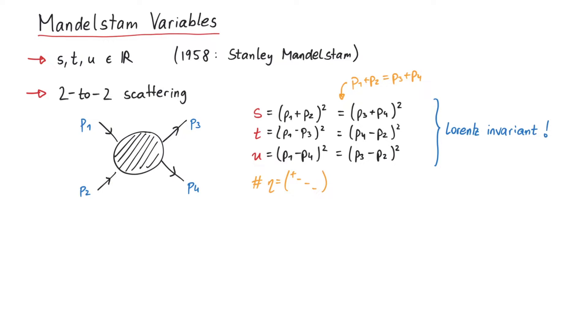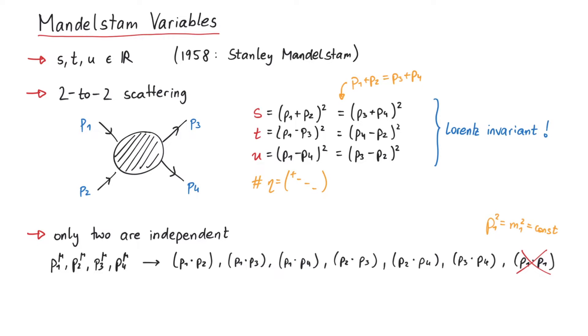let us remark that out of these three quantities, only two are actually independent. This can be shown in the following way. Using the four-momentum p1, p2, p3 and p4, we can build six Lorentz invariant quantities. Combinations like p1 times p1 do not count, since this is equal to the squared mass and therefore a constant.